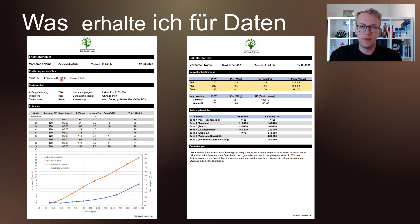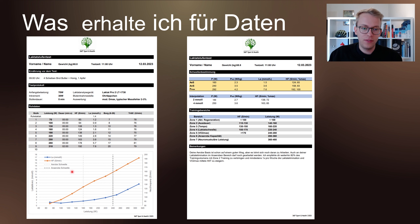Die Excel-Tabelle erstellt eine Grafik: Man sieht die Herzfrequenz, die Laktatkurve, und es bestimmt die Aerobe Schwelle und die Anaerobe Schwelle, welche hier unten angezeigt wird. In diesem Beispiel: 160 Watt bei 1,5 Millimol Laktat für die Aerobe Schwelle, und die Anaerobe Schwelle bei 3,6 Millimol Laktat bei 240 Watt.